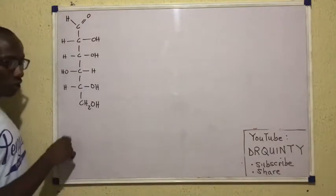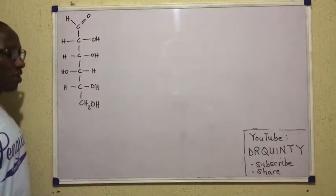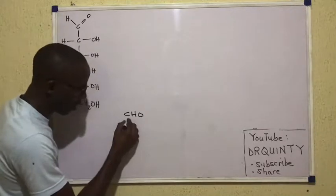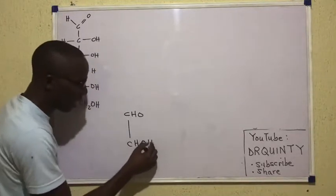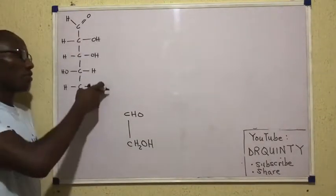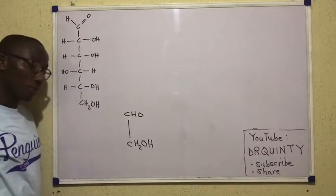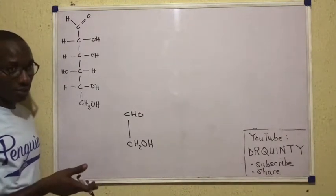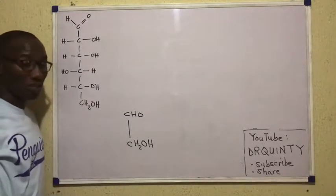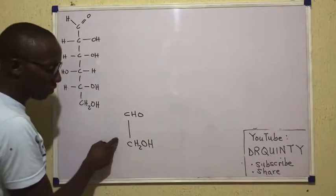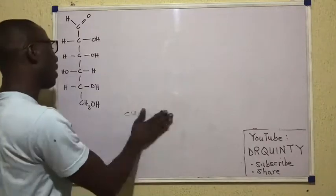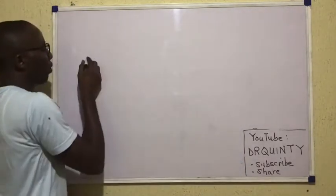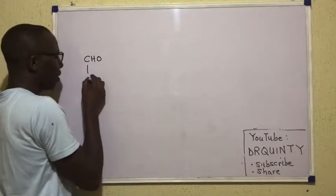This is glucose like we saw in the first video. For the sake of the reactions we are going to be looking at, I'm going to use this structure for glucose: CHO at the top, then CH2OH at the bottom. It will mean that the asymmetric carbons have all been hidden because during the reaction it's just these two carbons that react in most cases.